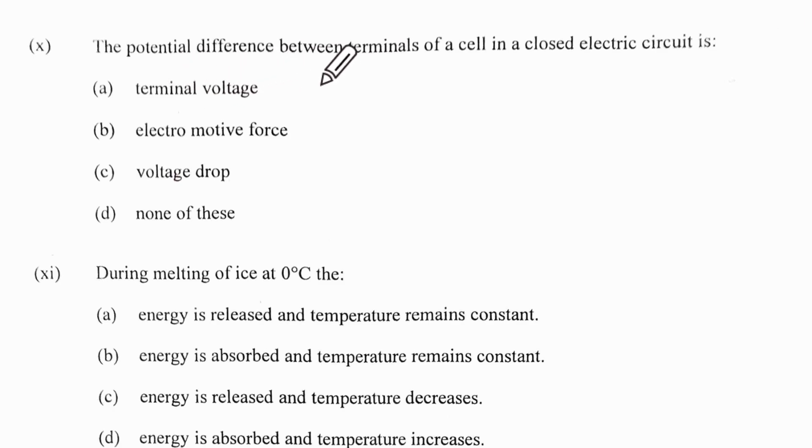The potential difference between the terminals of the cell in a closed circuit, which means the key is shut, is the terminal voltage by definition.